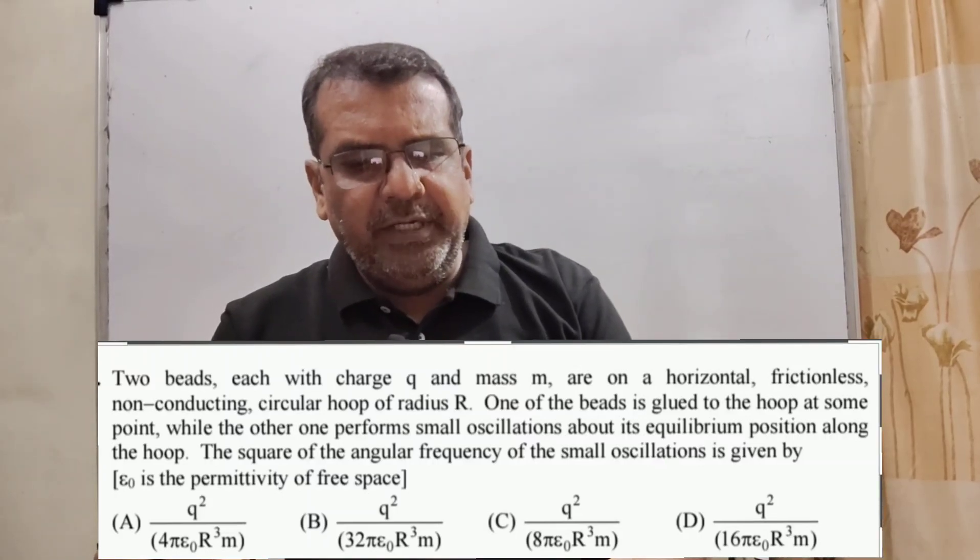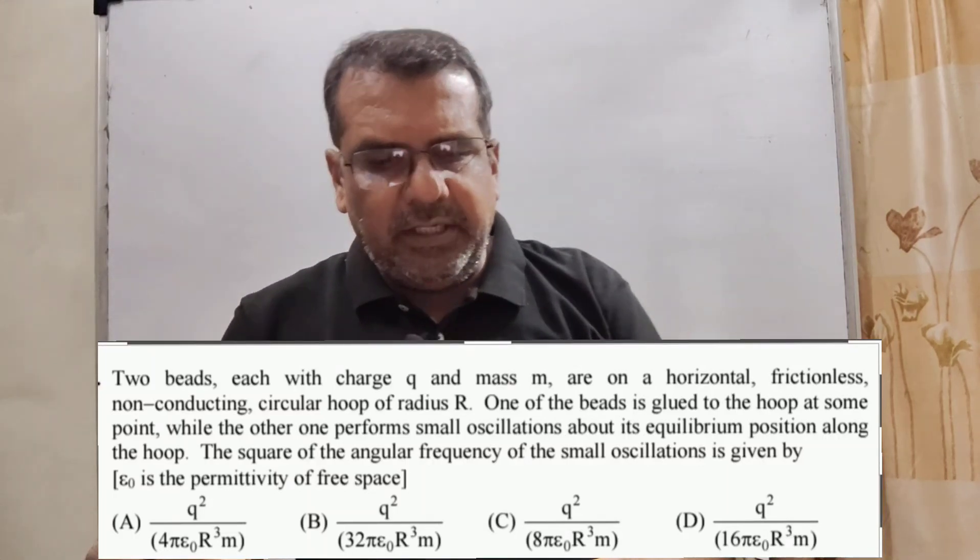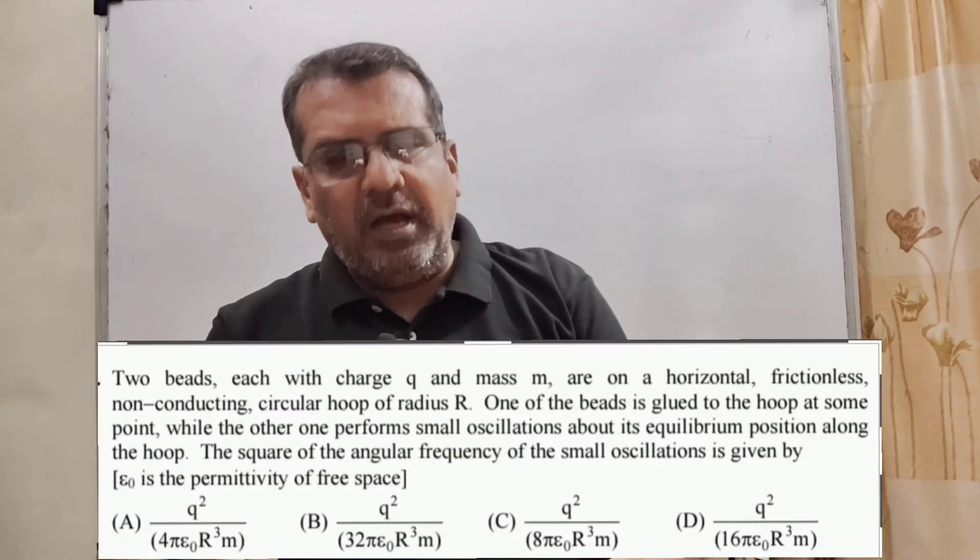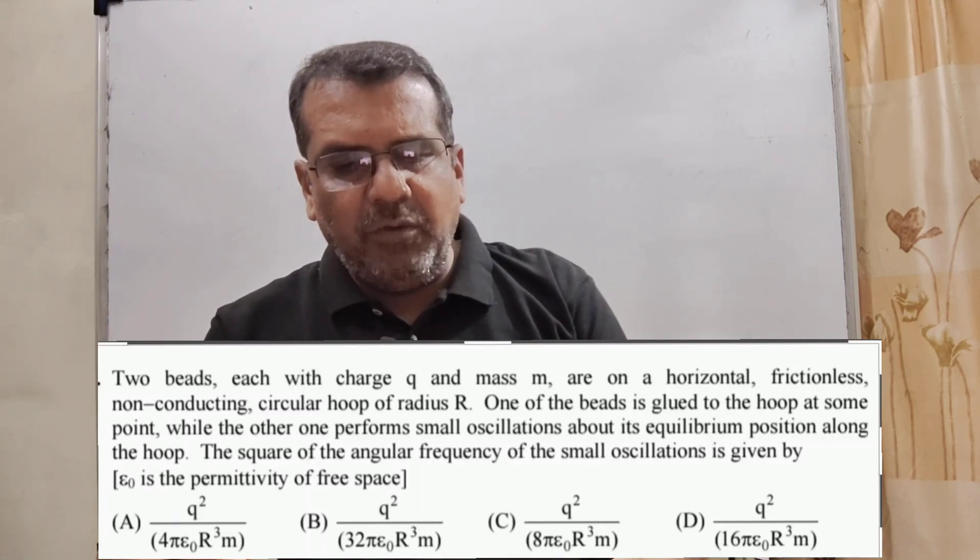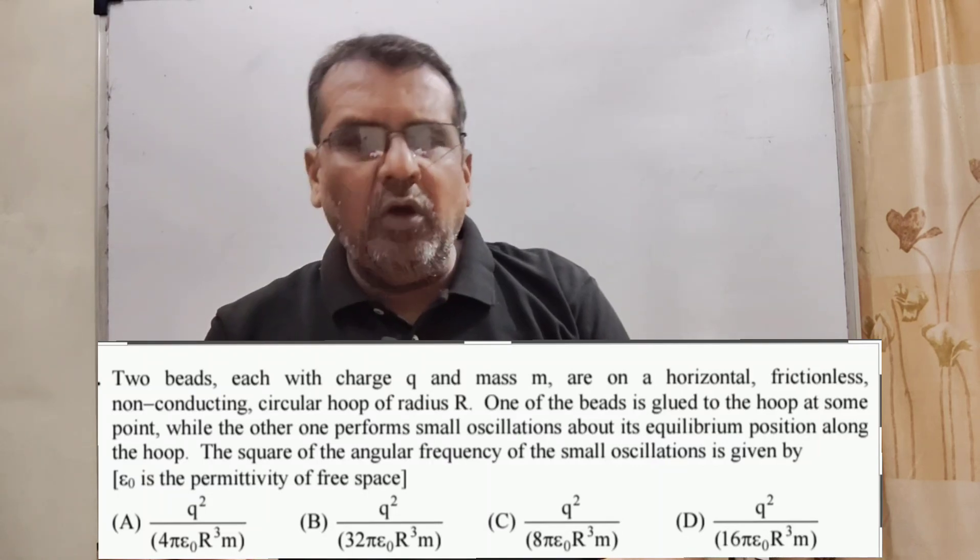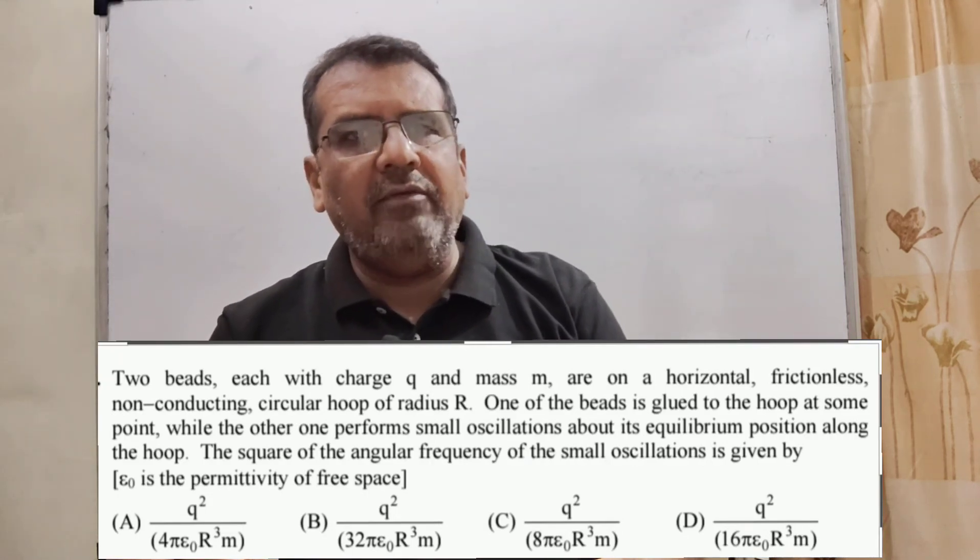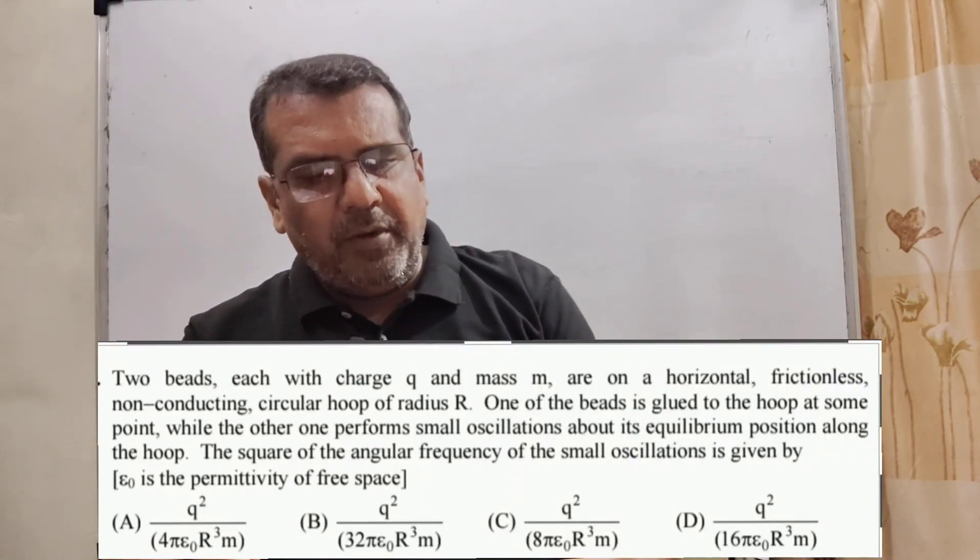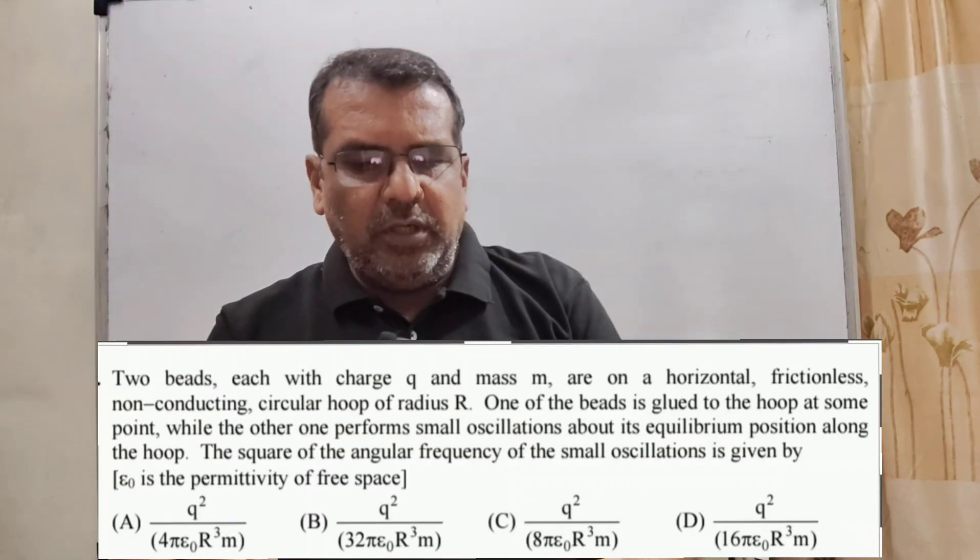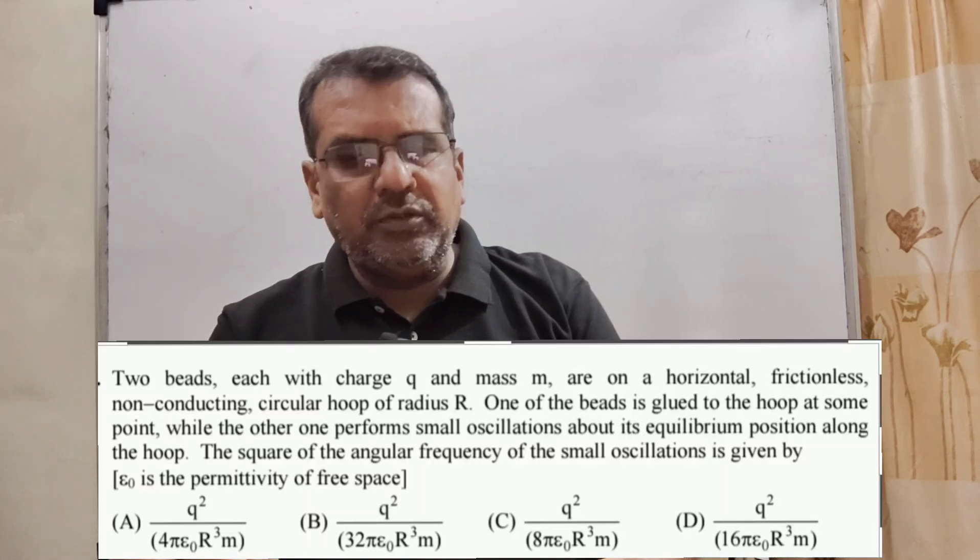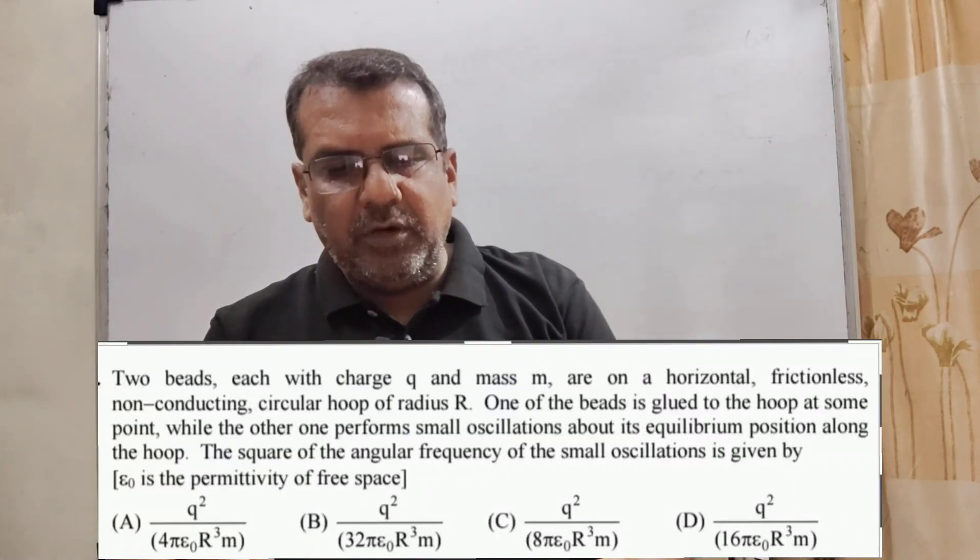Now here is the question. Two beads with charge small q and mass small m are on a horizontal frictionless non-conducting circular hoop of radius capital R. One of the beads is glued to the hoop at some point while the other one performs small oscillations about its equilibrium position along the hoop. The square of the angular frequency of the small oscillations is given by - here we have given four options. Options are: a) q² / 4πε₀R³m, b) q² / 32πε₀R³m, c) q² / 8πε₀R³m, and d) q² / 16πε₀R³m.